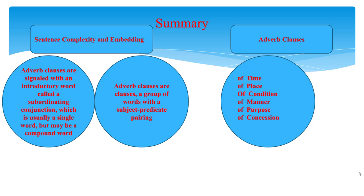The first, second, third, fourth, next, last time: 'The first time I went to New York, I was intimidated by the city.' The first, second, third, fourth, next, last time means 'that specific time.' We can use these forms to be more specific about which time of a number of times something happens.